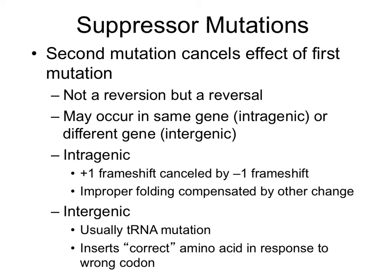Suppressor mutations are mutations that cancel the effect of a first mutation — not a reversion, but a reversal. They may occur in the same gene (intragenic) or a different gene (intergenic). Intragenic: a plus-one frame shift can be canceled by a minus-one frame shift, or improper folding compensated by another change. Intergenic suppressor mutations usually involve a tRNA mutation that inserts the correct amino acid in response to the wrong codon, allowing the right amino acid to be added even though the mRNA is mutated.